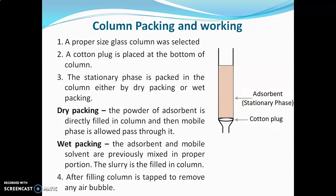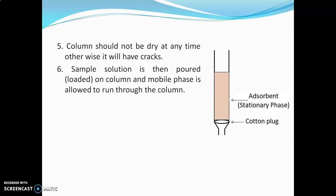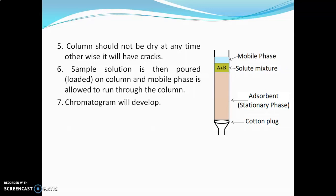After filling the column with stationary phase, it is tapped to remove any air bubbles, as air bubbles in the packing will lead to incorrect analysis. The column should not be allowed to dry at any point, otherwise it will develop cracks; once the column is cracked it becomes useless and analysis is not possible. The sample solution is then loaded onto the column and the mobile phase is allowed to run through it, developing the chromatogram.